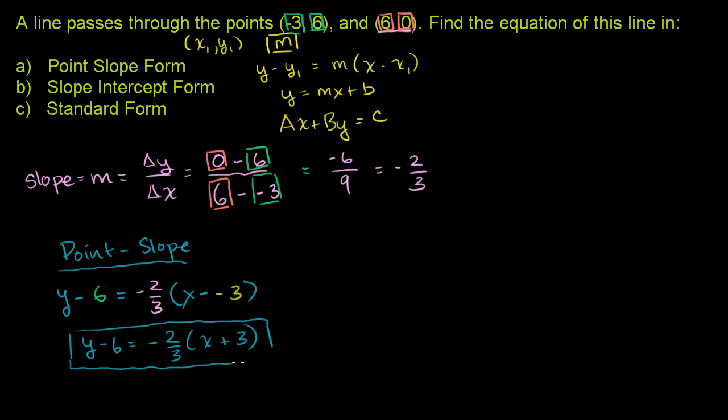Now, we can literally just algebraically manipulate this to put it into slope-intercept form. Let's do slope-intercept. So what can we do here to simplify this? We can multiply out the -2/3. So you get y - 6 = -2/3x - 2. And now to get it in slope-intercept form, we just have to add 6 to both sides so we get rid of it on the left-hand side.